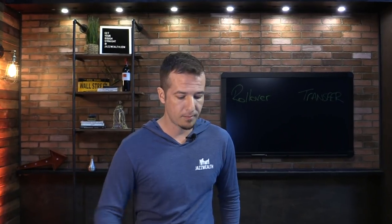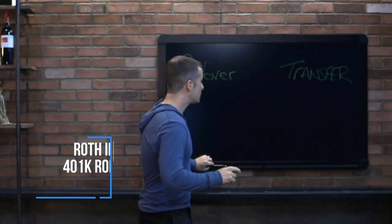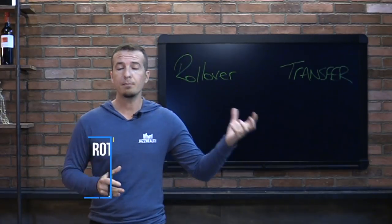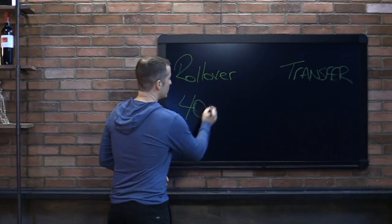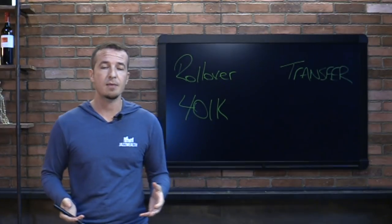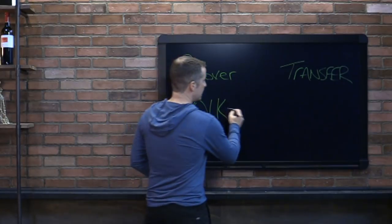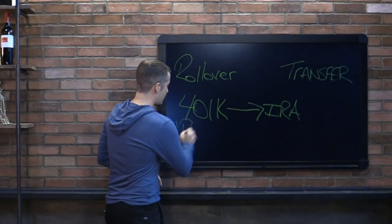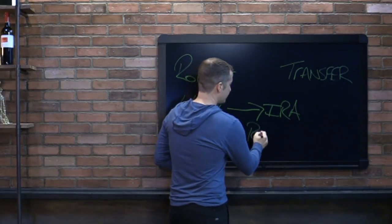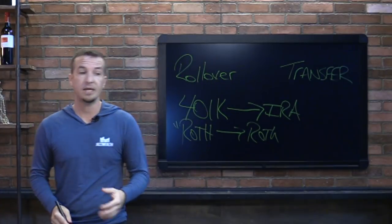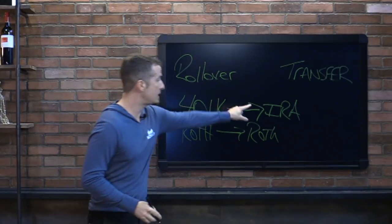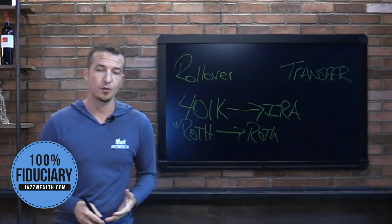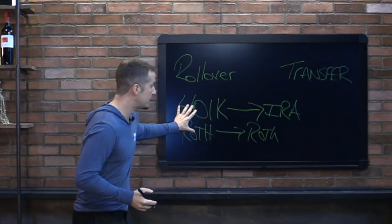I'm going to use the board back here — we can zoom in and check this out. So we've got rollover and transfer — they are different, they are much different. A rollover is actually when you are leaving one plan and going to another. A very common example would be a 401k: you've left your job, you had a 401k at that job, and now you want to roll it over into an IRA — most commonly a traditional IRA. But if you had a Roth 401k, you would move it into a Roth IRA. The rollover process means leaving one plan and entering into a new one.